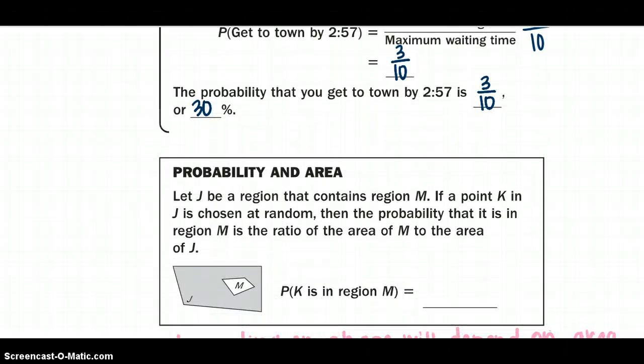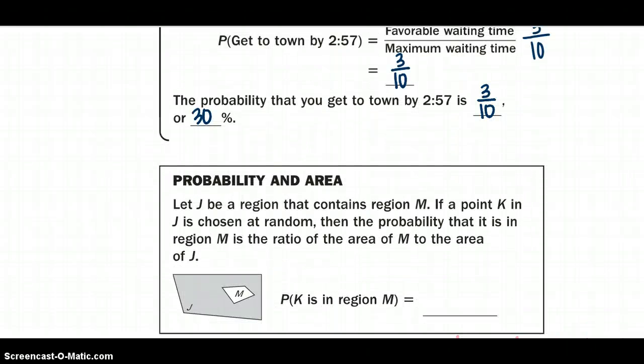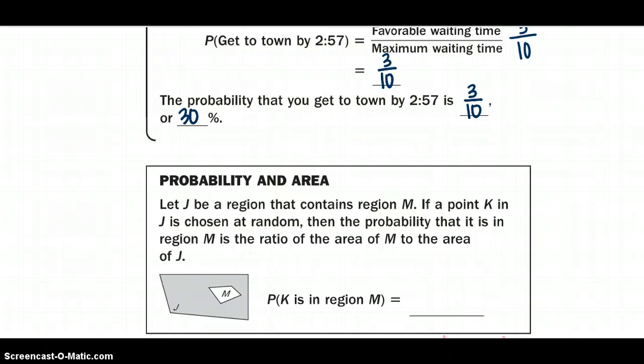Alright, let's look at the probability of an area. So pretty much the same kind of concept. We're going to let our region J, our big area, contain region M. So if we pull point K from this random, or chosen at random, what is the probability that it might land on area M? So that ratio is going to be area M to the area of J. So we want our point to fall on the region of M.